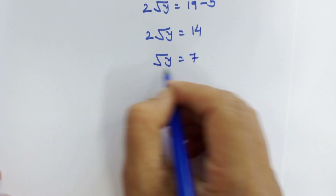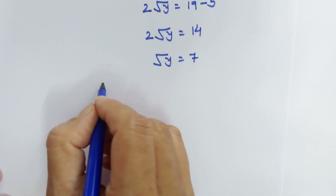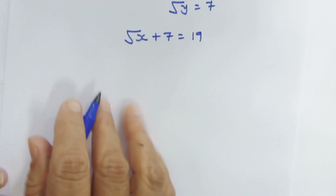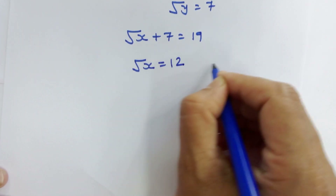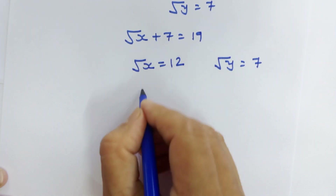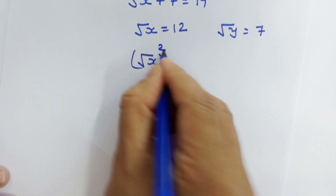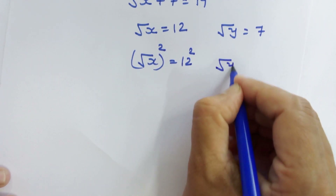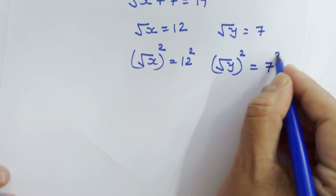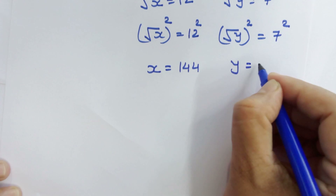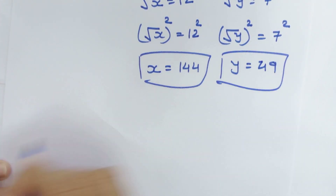Now we have the value of √y. Let's put this value in equation number 1: √x plus 7 equals 19, so √x equals 12 and √y equals 7. Let's square both sides: x equals 144 and y equals 49. These are the answers. Thanks for watching and see you in the next one, bye bye!